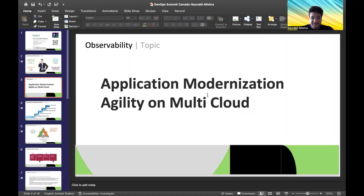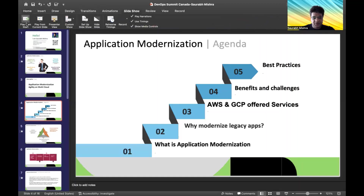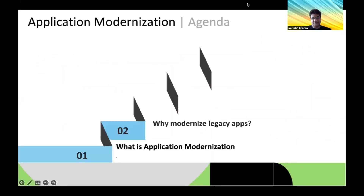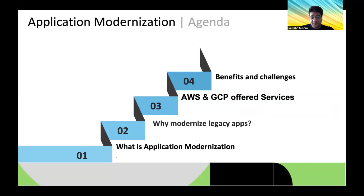Let's discuss application modernization — what it means, how it's useful, and how many companies are adopting it by moving from monolithic to microservices, what the motive is and what benefits they're getting. In this session I'll explain what application modernization is, why you should modernize legacy apps, what cloud offerings are available — predominantly AWS and GCP — and what the benefits, challenges, and best practices are.